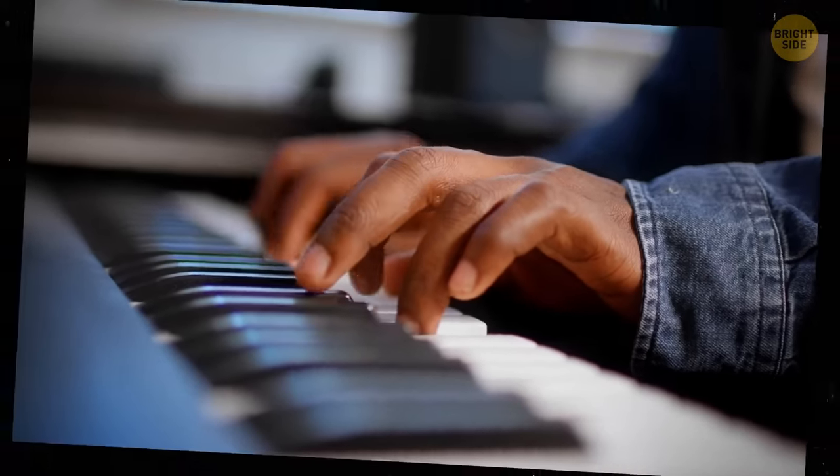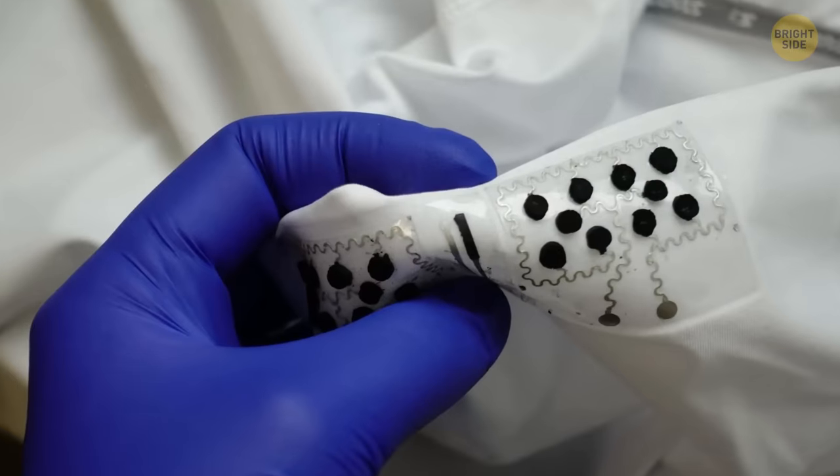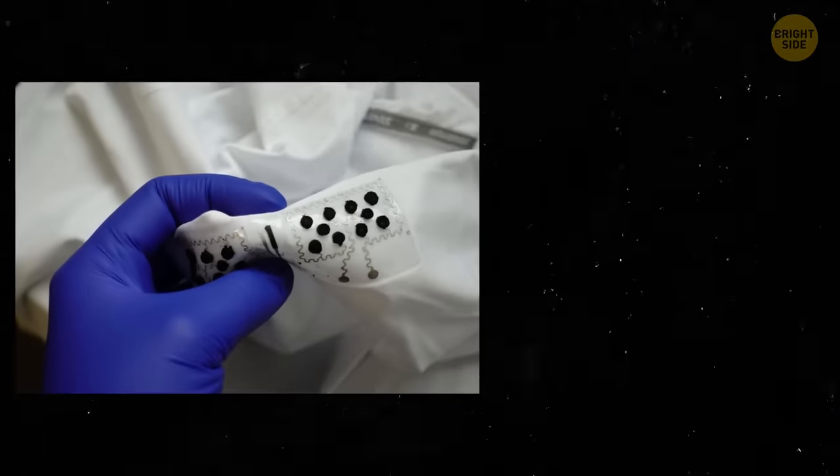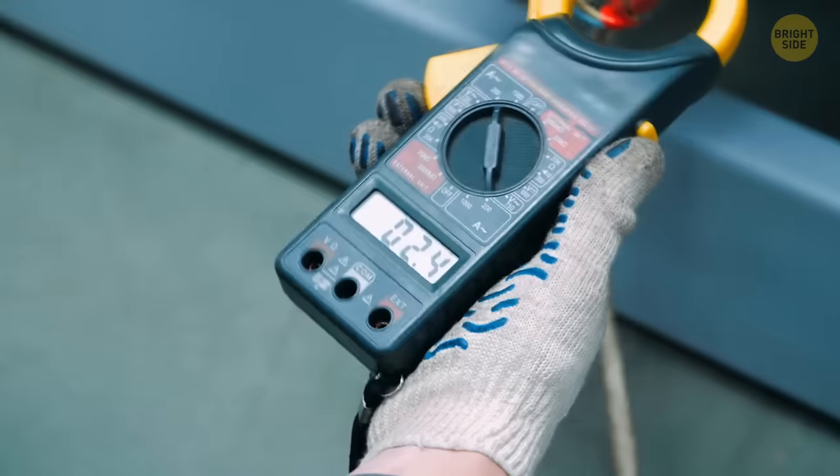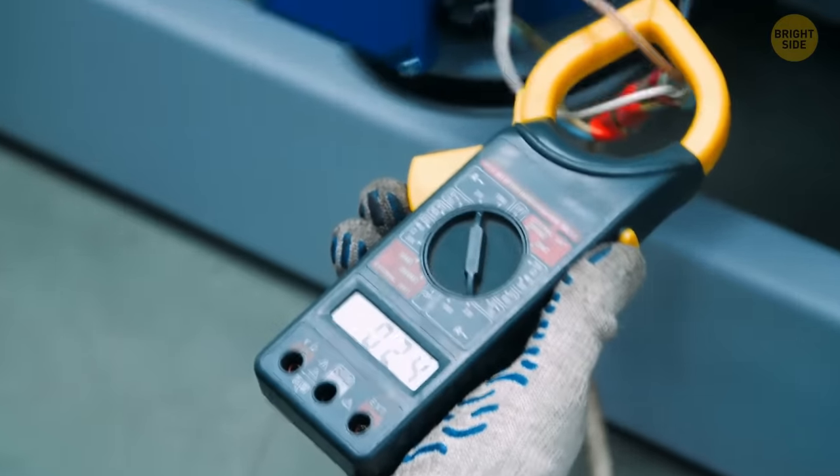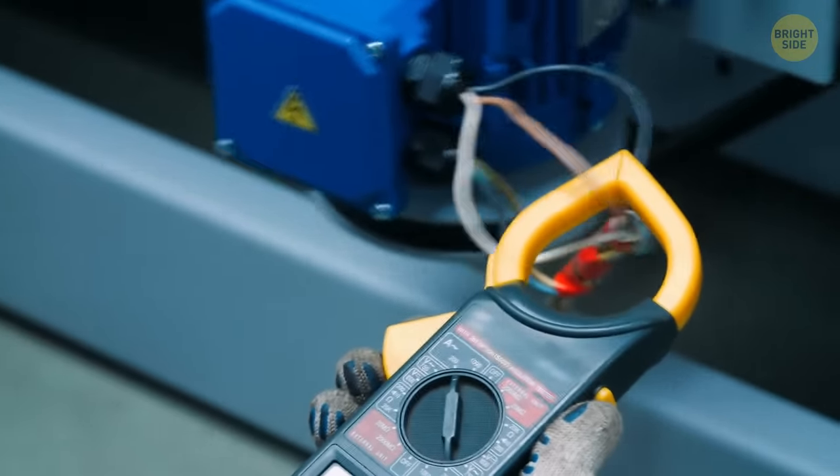After some testing, the engineers found that wearing the gadget for 10 hours while snoozing can generate enough juice to power an electronic watch for a full day. That's about 400 millijoules of energy, in case you were wondering. Pretty neat, huh?